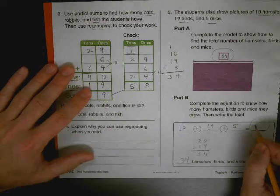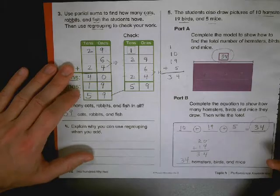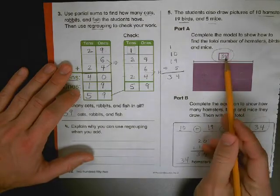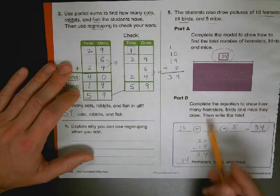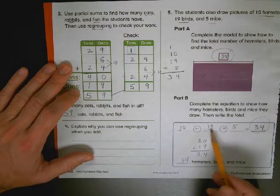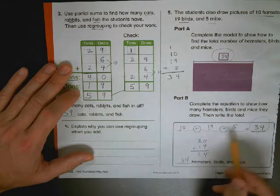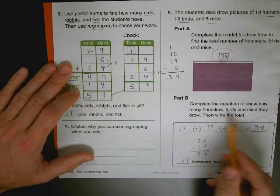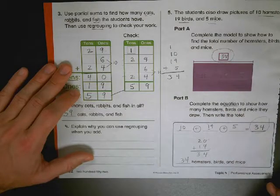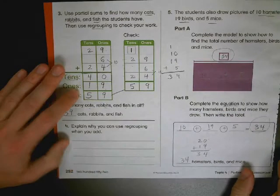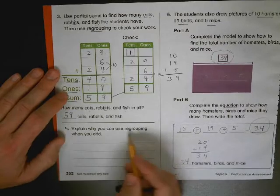Make sure you write it in here as well. So ten plus nineteen plus five is equal to thirty-four. And your model: ten plus nineteen plus five equals thirty-four. Down here, there's your equation.